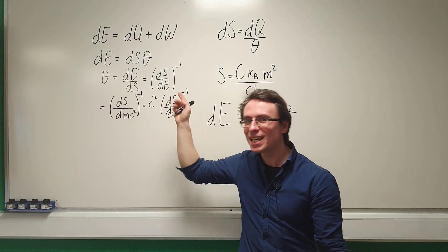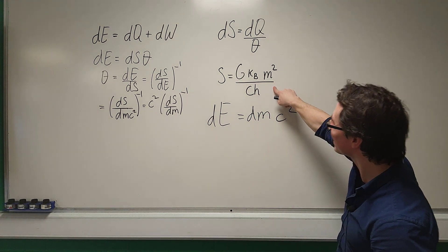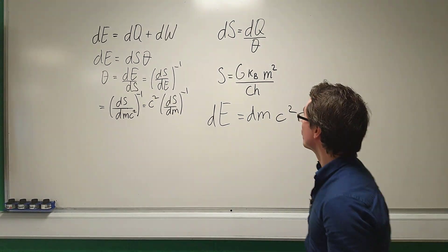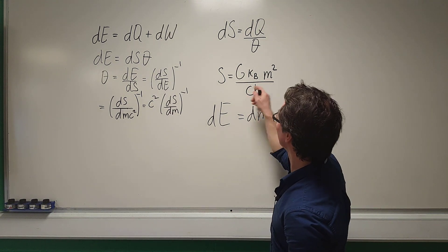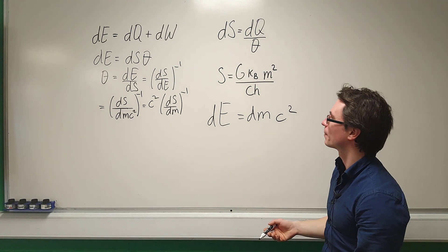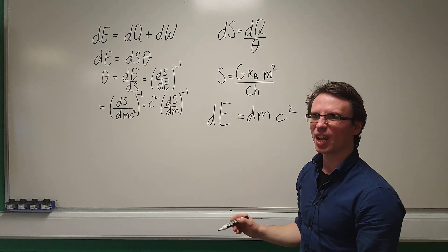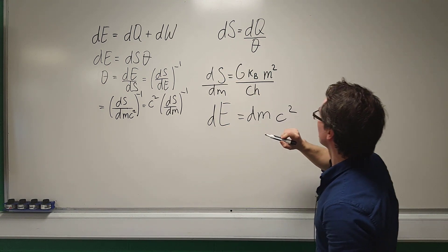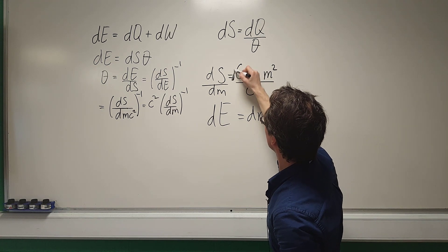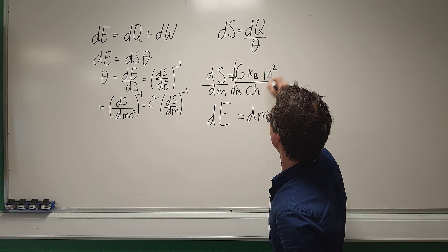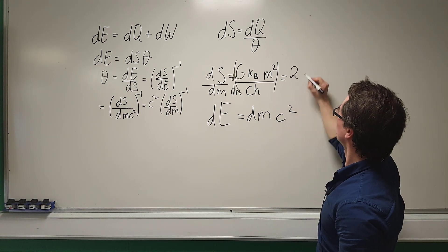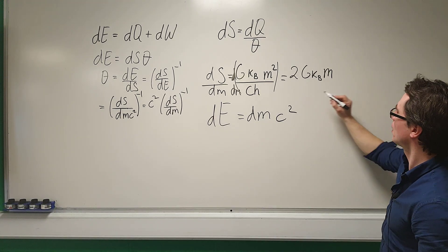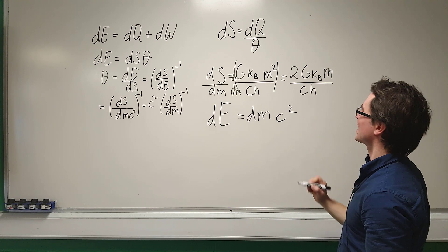We can see why I flipped the expression — I can take the entropy expression and differentiate it with respect to M, which is not too bad. So computing DS/DM: differentiating with respect to M gives 2G·k_B·M divided by the constant ħ (h-bar).